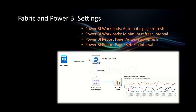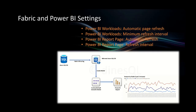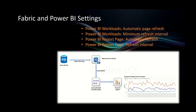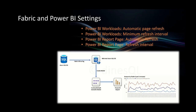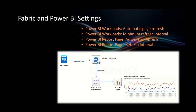In the admin portal, go to the capacity page. You'll see all the capacities you have — select the one related to your workspace and open its properties. Under the Power BI section you'll see two settings: automatic page refresh and minimum refresh interval. First, enable automatic page refresh, otherwise even if you configure it on the Power BI report it won't work.